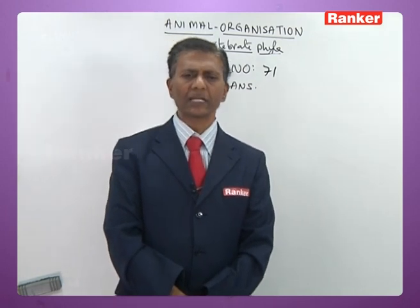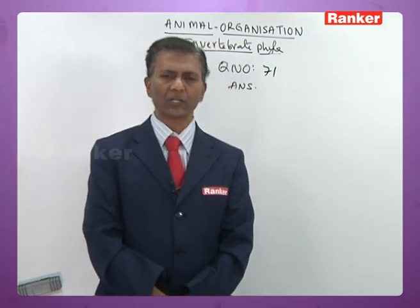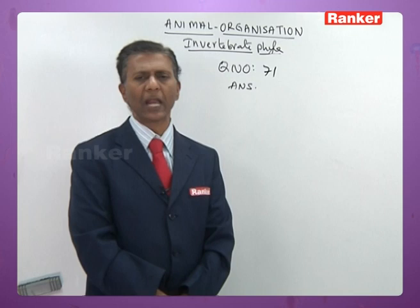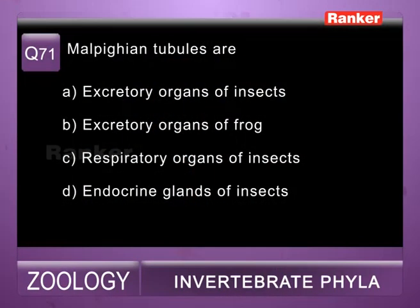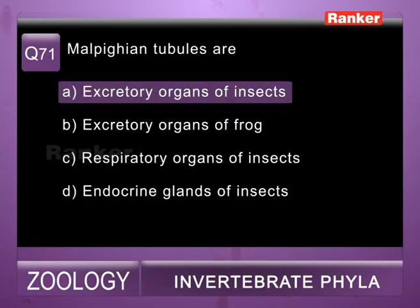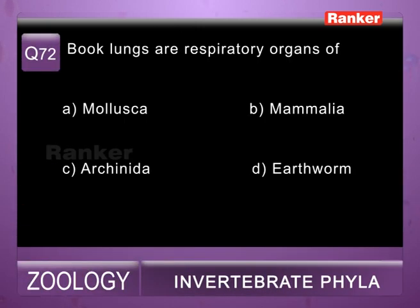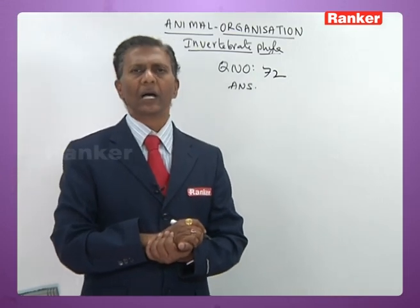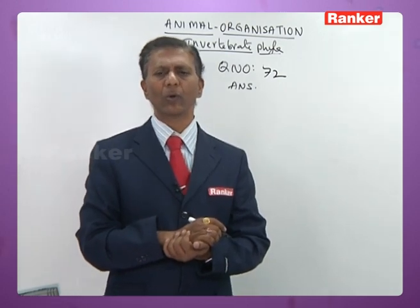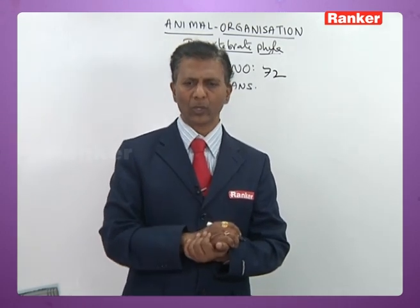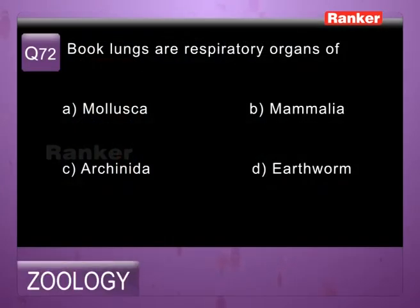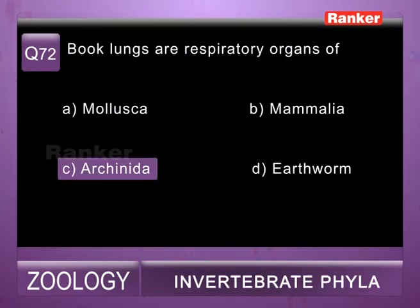Question seventy-one: Malpighian tubules are — a) excretory organs of insects (correct), b) excretory organs of other invertebrates, c) respiratory organs of insects, d) endocrine glands of insects. Malpighian tubules are meant for excretion in insects. Seventy-first question correct answer is a. Question seventy-two: book lungs are the respiratory organs of — a) Mollusca, b) Mammalia, c) Arachnida, d) earthworms. In scorpions the respiratory organs are called book lungs; scorpions belong to Arachnida. So seventy-second question correct answer is c.